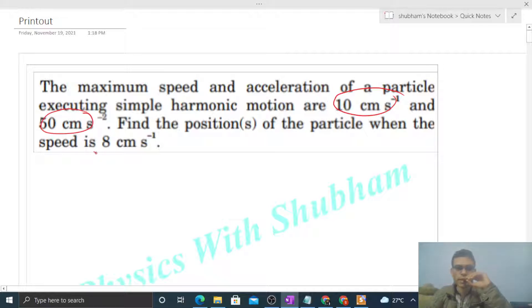Fine. So we have vmax, the required maximum speed, that is 10 centimeter per second, and maximum acceleration is also given, that is 50 centimeter per second square.